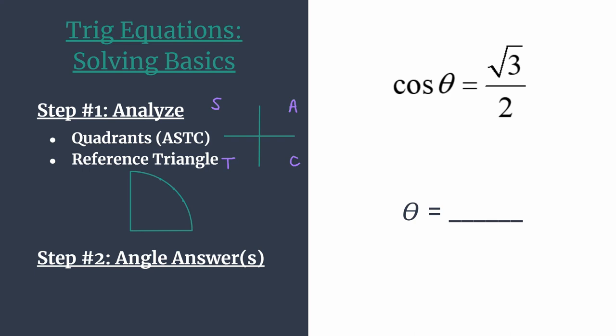The S tells us that sine and its reciprocal cosecant are the only ones positive in quadrant 2. In quadrant 3, the T tells us tangent and its reciprocal cotangent are positive. And in quadrant 4, the positive trig functions are cosine from the C, and also its reciprocal secant. Since cosine of theta equals a positive value, positive square root 3 over 2, our answers will be in quadrant 1 and quadrant 4, where cosine is positive.